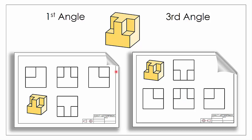Now let's look at our object from the top. From above the object in first angle, we can see our plan view appearing below our front elevation, which is our primary view. In third angle, however, our plan view appears above the object. So in spite of being the same view, this appears below in first angle whereas this appears above our front elevation in third angle.